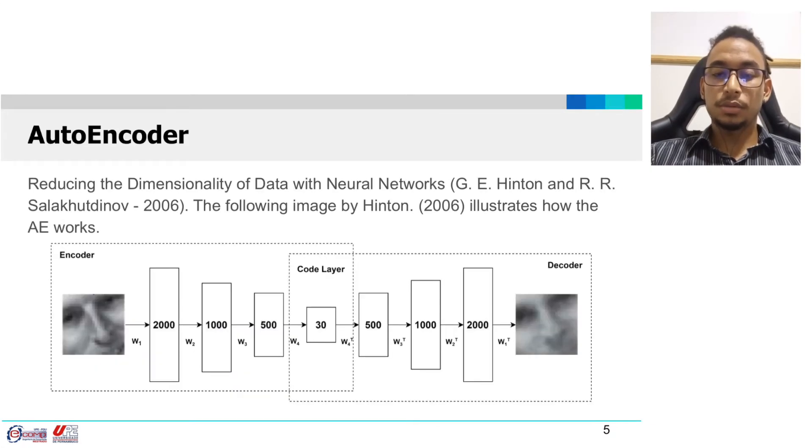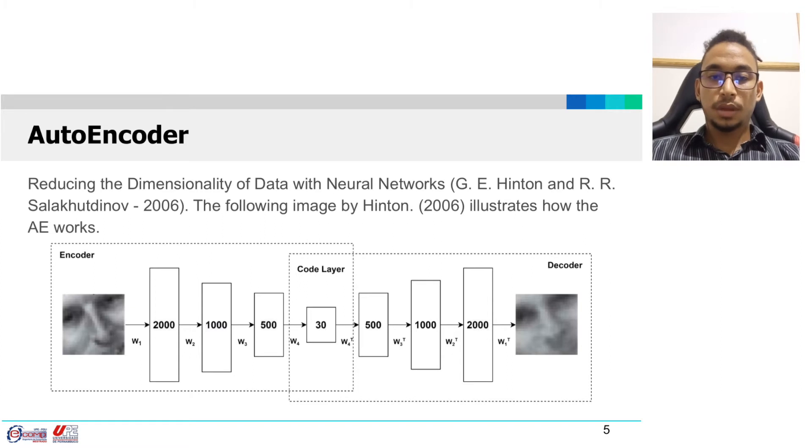Proposed by Hinton, autoencoders can encode data, eliminate less important information and still obtain good results on classification tasks. An advantage of autoencoders above PCA and SVD is the fact that they consider non-linear information to encode data.